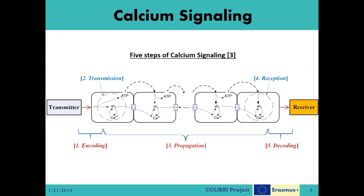The five-step communication model can be translated to calcium signaling as follows. The external stimuli, which initiates the whole communication process, constitutes the encoding step. The release of IP3 and calcium molecules based on the external stimuli inside the first cell is the transmission step. The propagation and relaying of the signal between adjacent cells, from the first cell to the last through the calcium channel, is the propagation step. At the last calcium-capable cell, the calcium signal is translated back into an external stimuli as the reception step. This resulting external signal is then sent to the receiver device, which decodes the original data in the decoding step, finalizing the communication process.